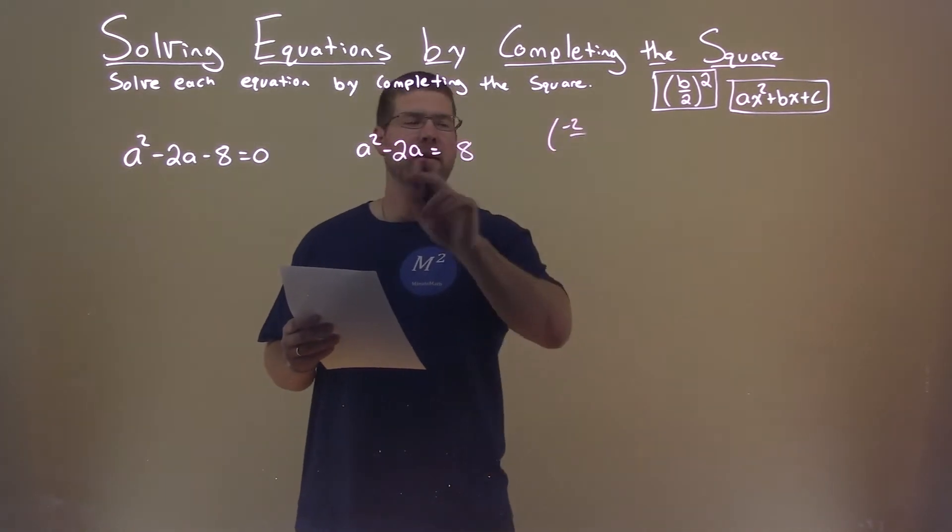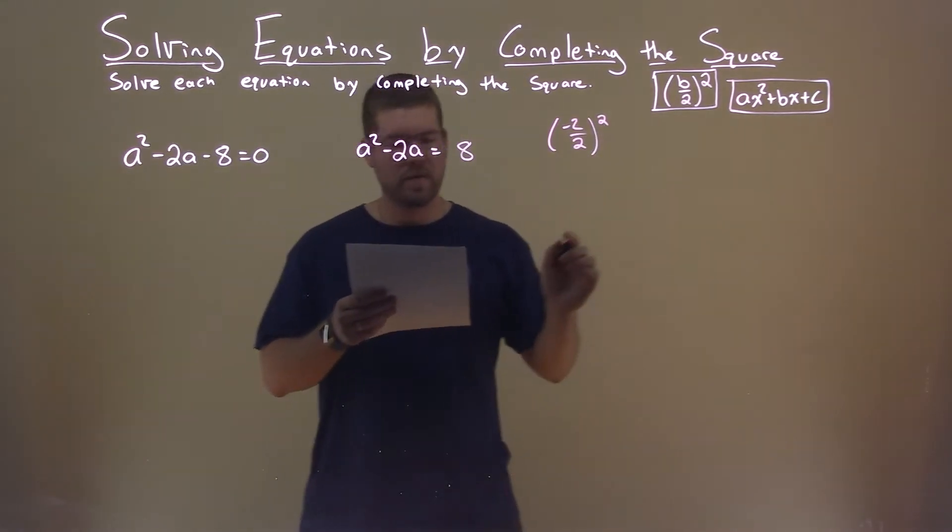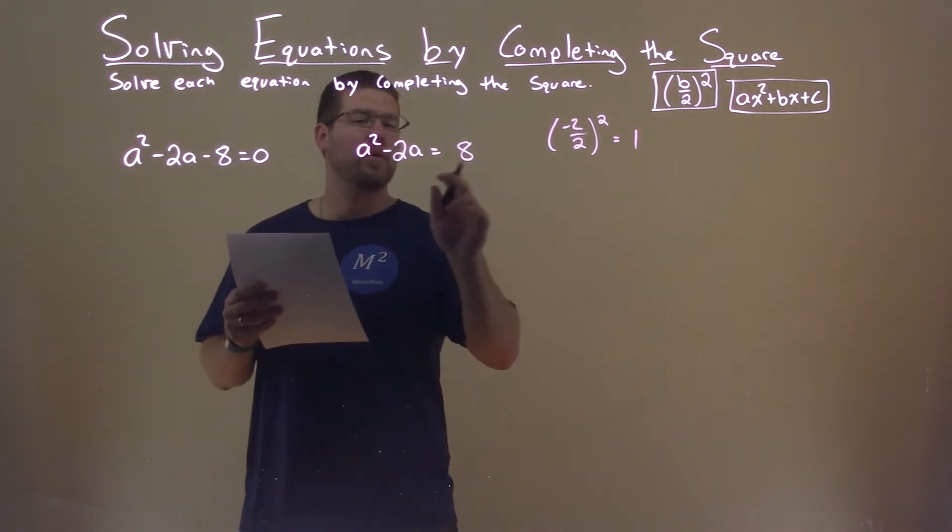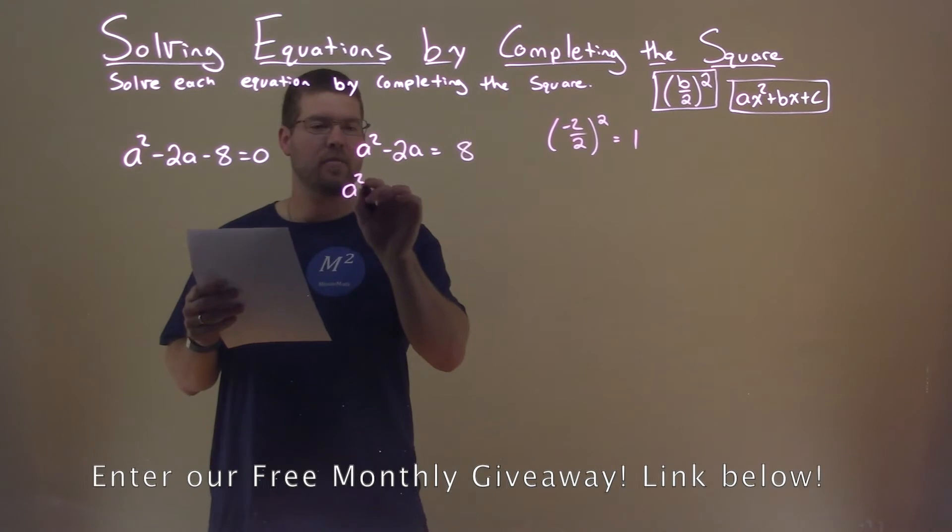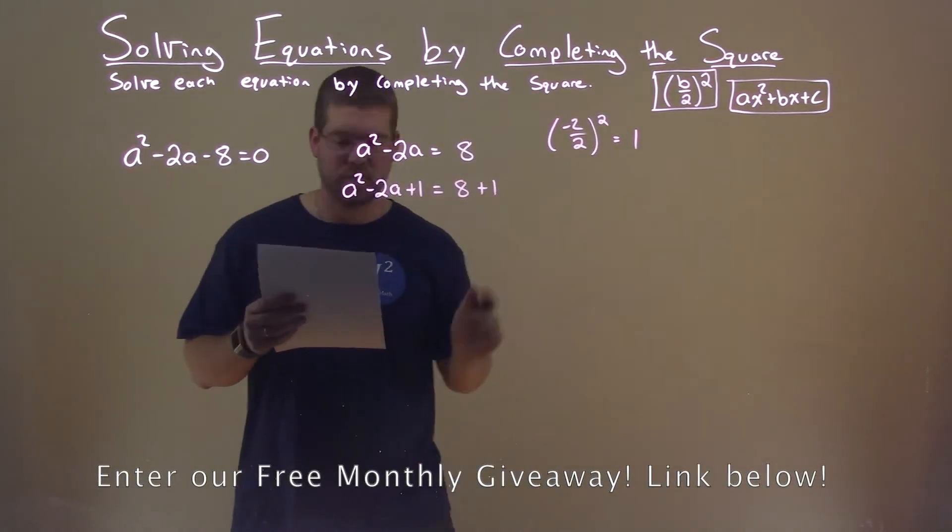I'm going to use my formula: negative 2 divided by 2, all squared. What does that come out to be? Well, that's a positive 1. So now we're going to add 1 to both sides. a squared minus 2a plus 1 equals 8 plus 1.